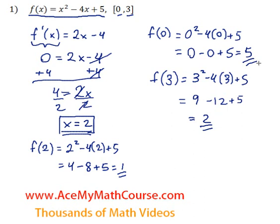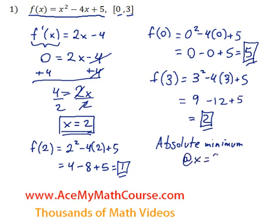So the lowest of these values is 1. So there's an absolute minimum of 1 at x equals 2. And y, of course, is 1.